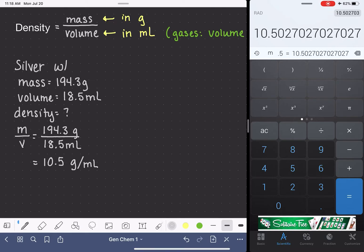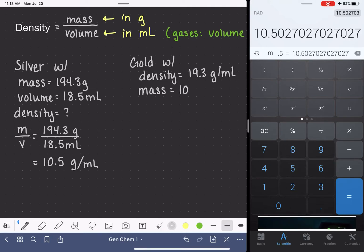We can get a little bit trickier with our density calculation. So let's say, for example, we have a piece of gold and gold has a density of 19.3 grams per milliliter. And let's say that we have a mass of gold that is 10 grams. What if we wanted to know the volume?